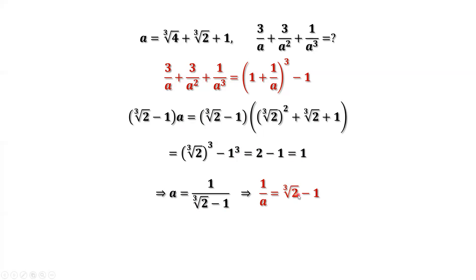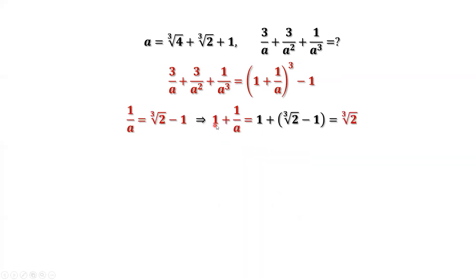What do we need? We need 1 plus 1 over a. We only have 1 over a here. We can find 1 plus 1 over a equals 1 plus this is 1 over a. Negative 1 positive 1 cancel. We have the third root of 2, which is 1 plus 1 over a. We have this. We can plug in this formula. The minus 1 will get the answer.